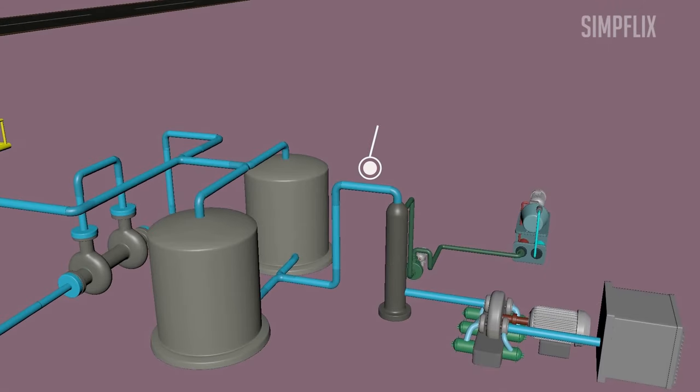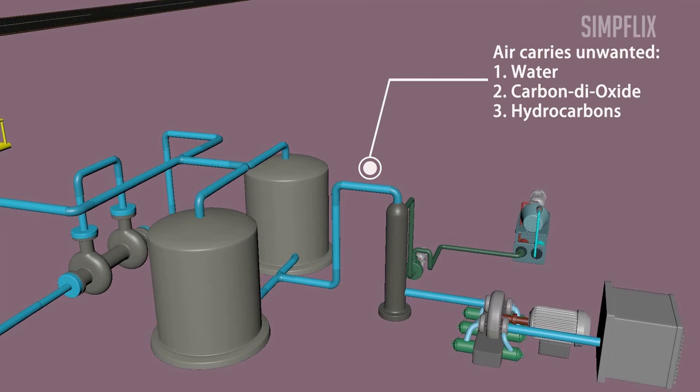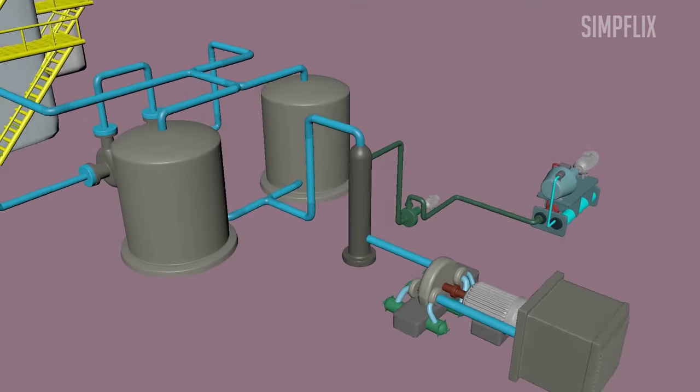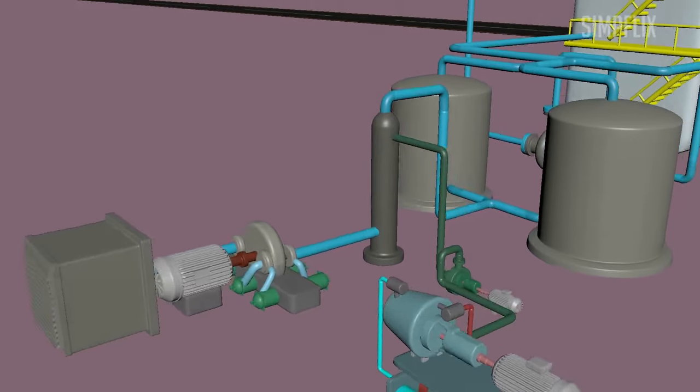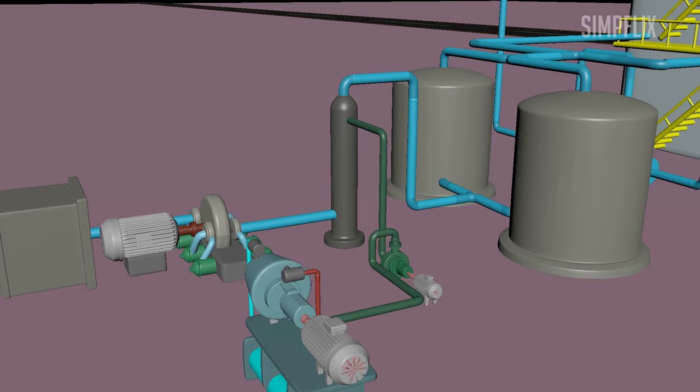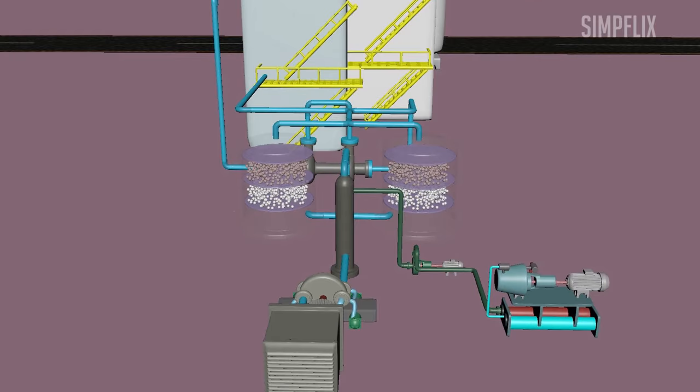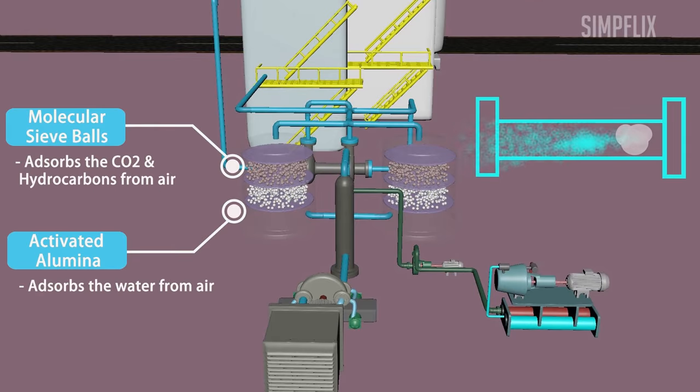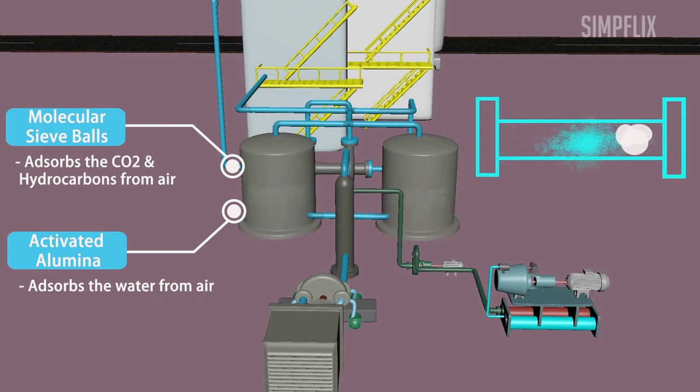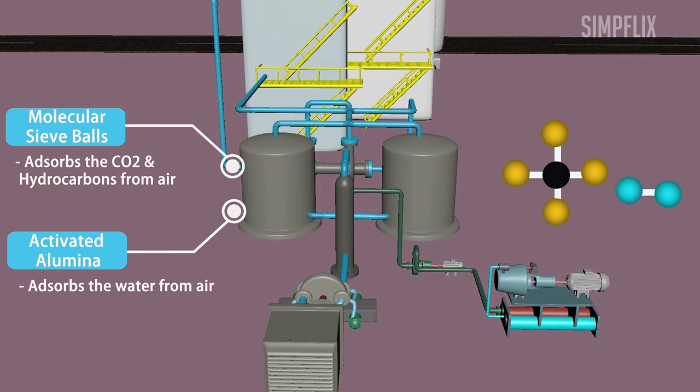So at this stage, high pressure, low temperature air is having impurities like water, carbon dioxide and hydrocarbons, which are not required. Water, hydrocarbons and carbon dioxide are removed in the purification units using molecular sieves and activated alumina. If water and carbon dioxide are not removed, then they will form ice in the lines and result in blockage of the air path. If hydrocarbons are not removed, then it will result in explosion if it accumulates in liquid oxygen.